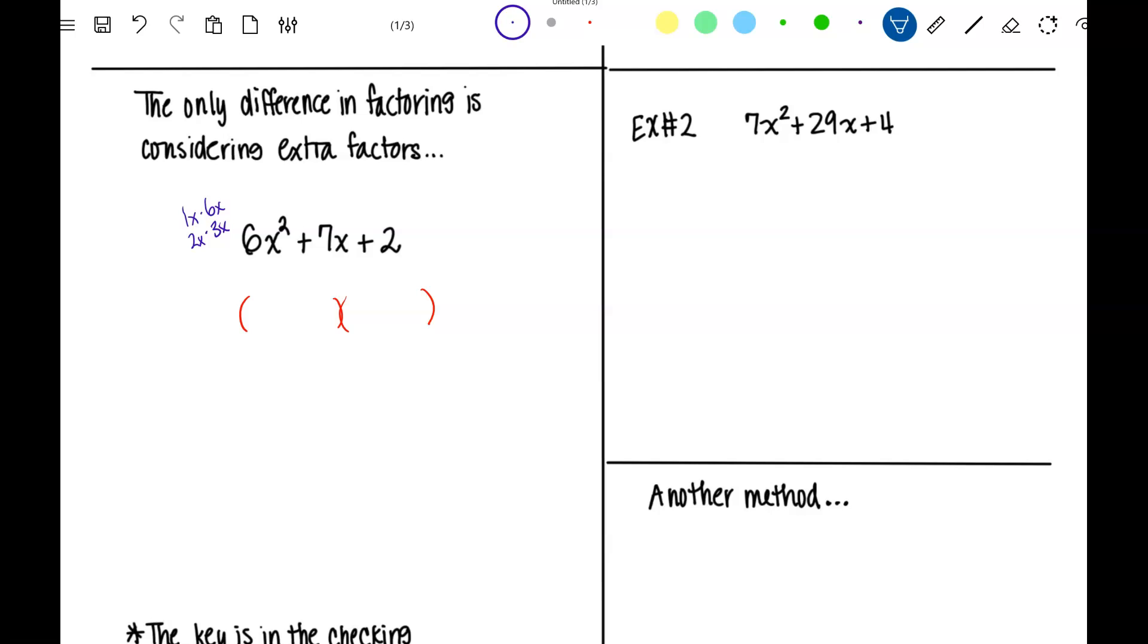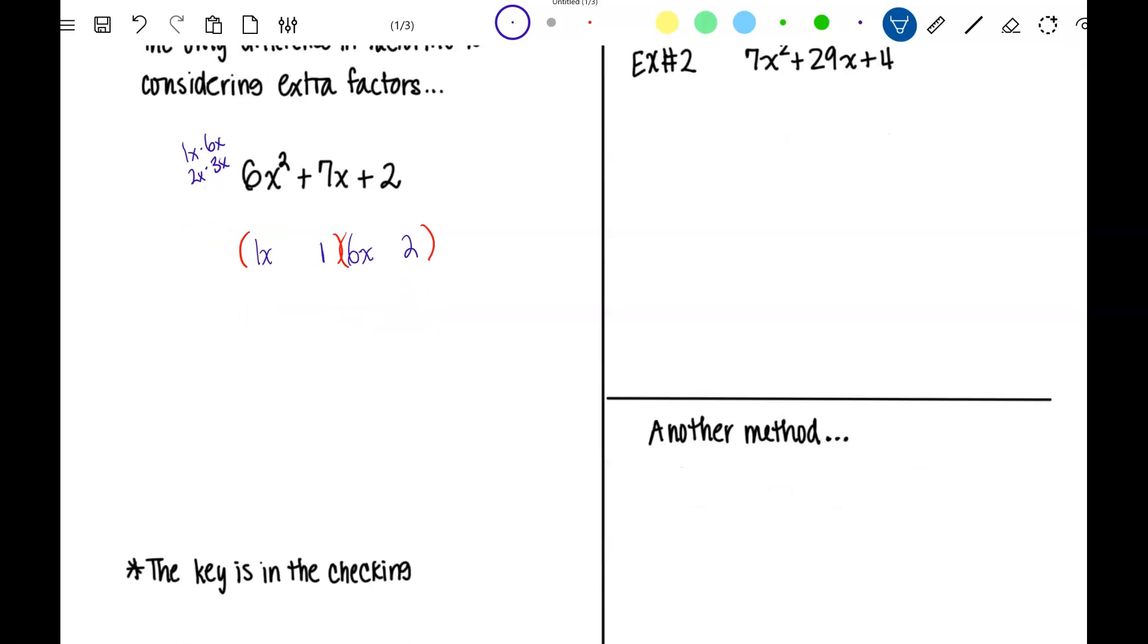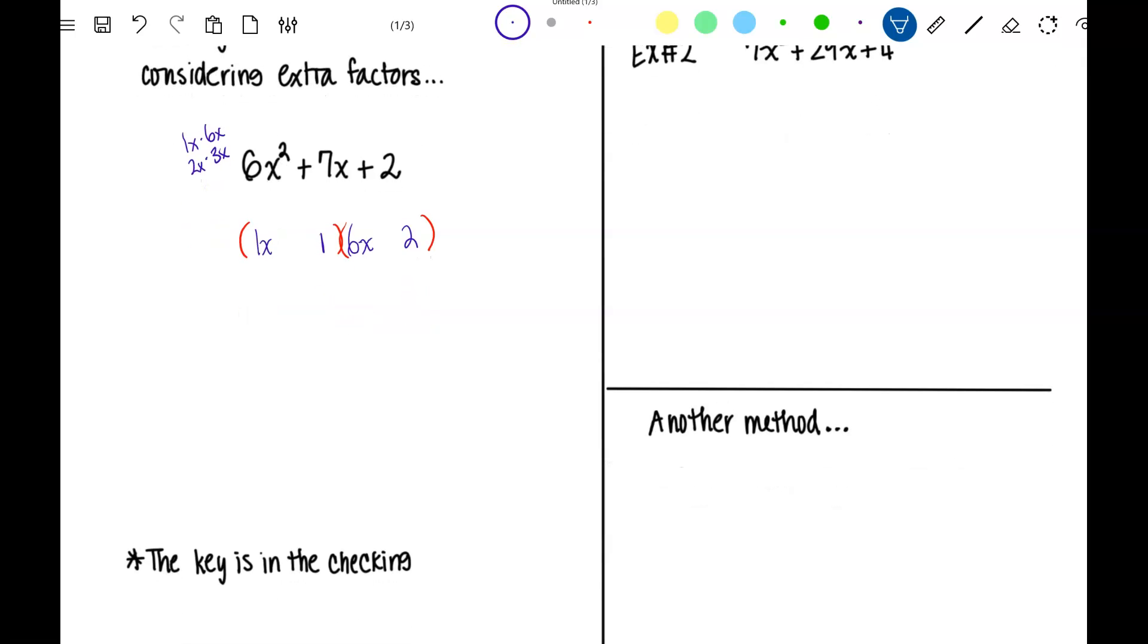So if I chose to do 1x and 6x, I know that 2 is my only, the only way to multiply and get 2 is either 1 times 2 or 2 times 1. But checking the inside and outside product here, I know this means the signs are going to be the same and they're both going to be positive, so I get a positive 6x and a positive 2x, which when I combine I give a positive 8x. Well, that's not what I want, I want a positive 7x.